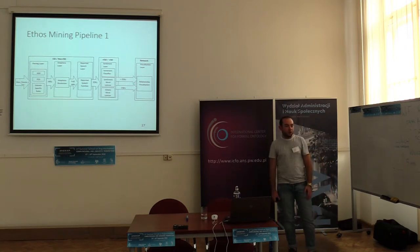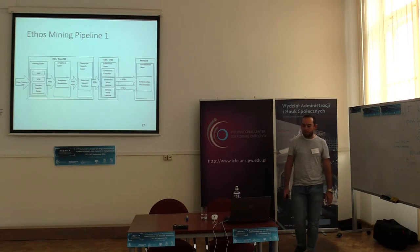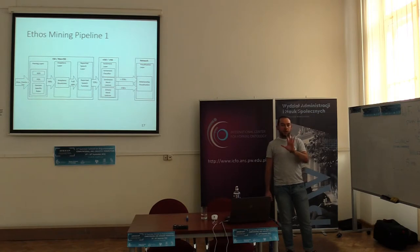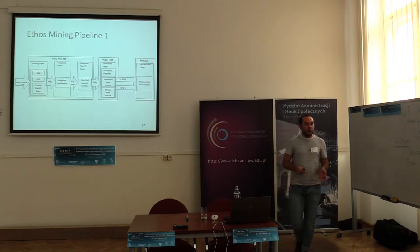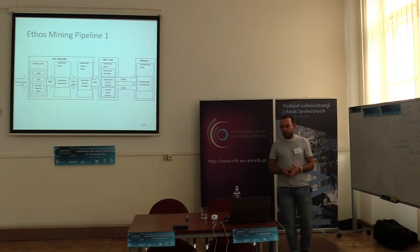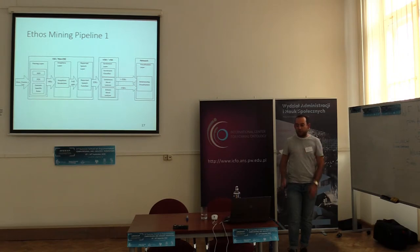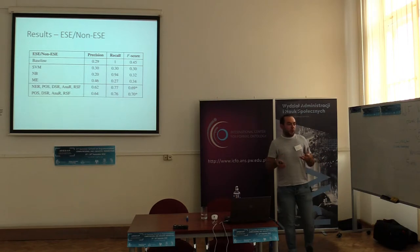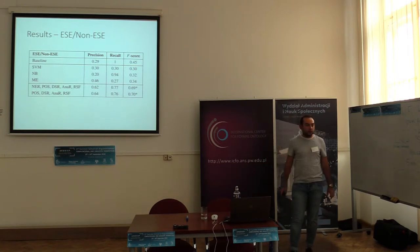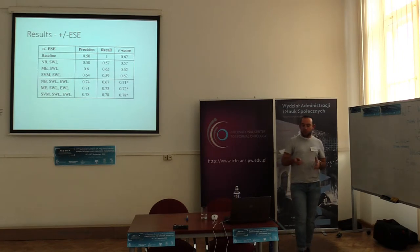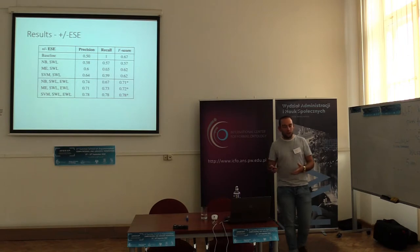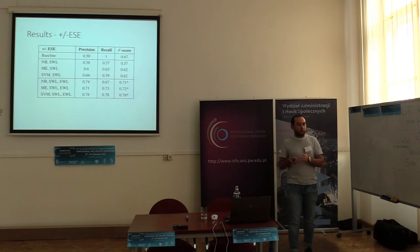We then want to try and remove some of the reported speech within the text, just referring to something that someone else has said. From this step you get a list of sentences that are either ethos or not. After this point you want to classify them as positive or negative. To do that, we used Bing Liu's sentiment analysis lexicon and then created our own ethos word lexicon for the sentiment classification. For determining if a sentence contains ethos, we ended up with an F-score of 0.7. Named entity recognition was removed because it gives a lot of false positives. For sentiment classification using a support vector machine with both the ethos word lexicon and Bing Liu's sentiment lexicon, we achieved a macro F-score in the high range.